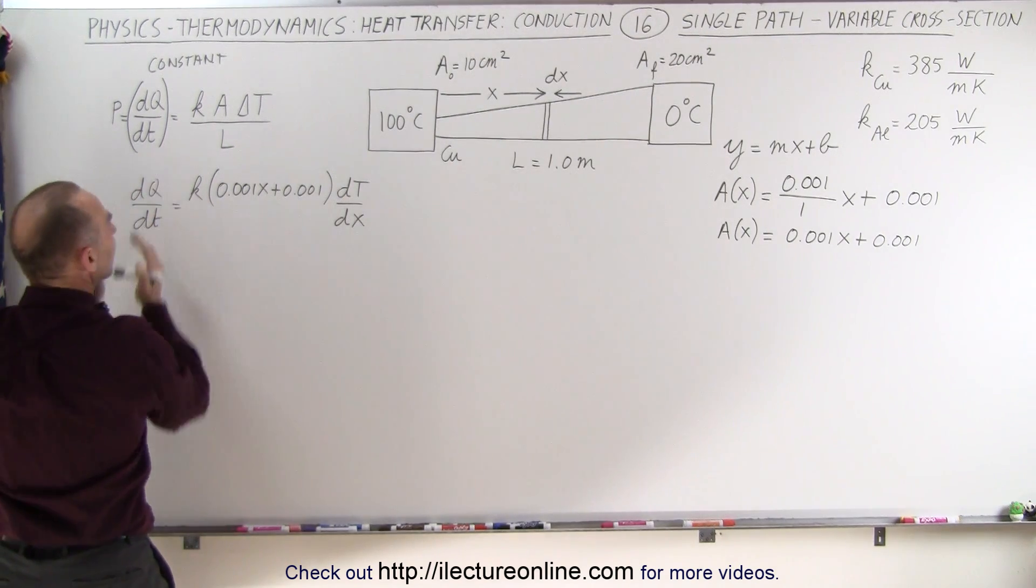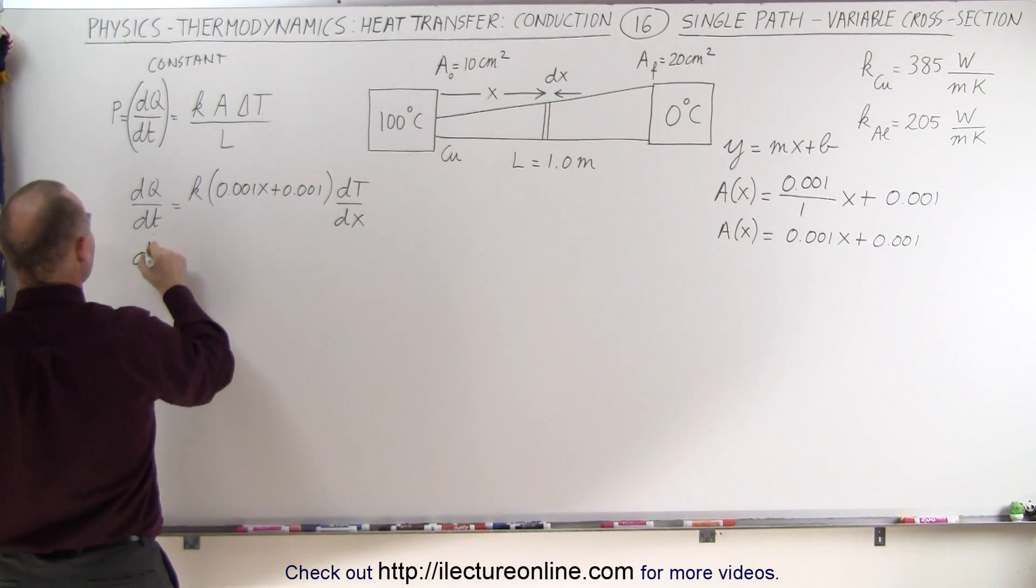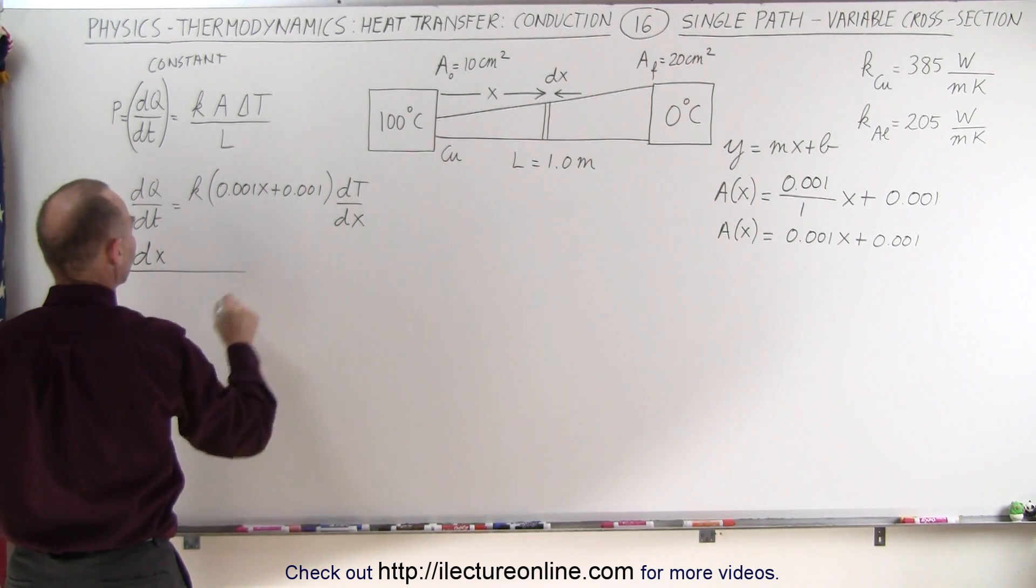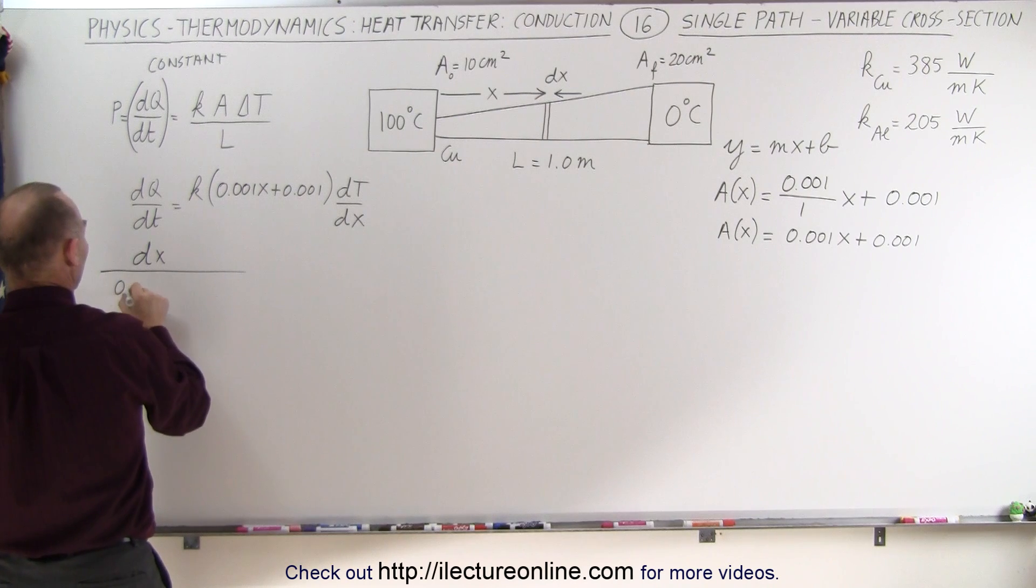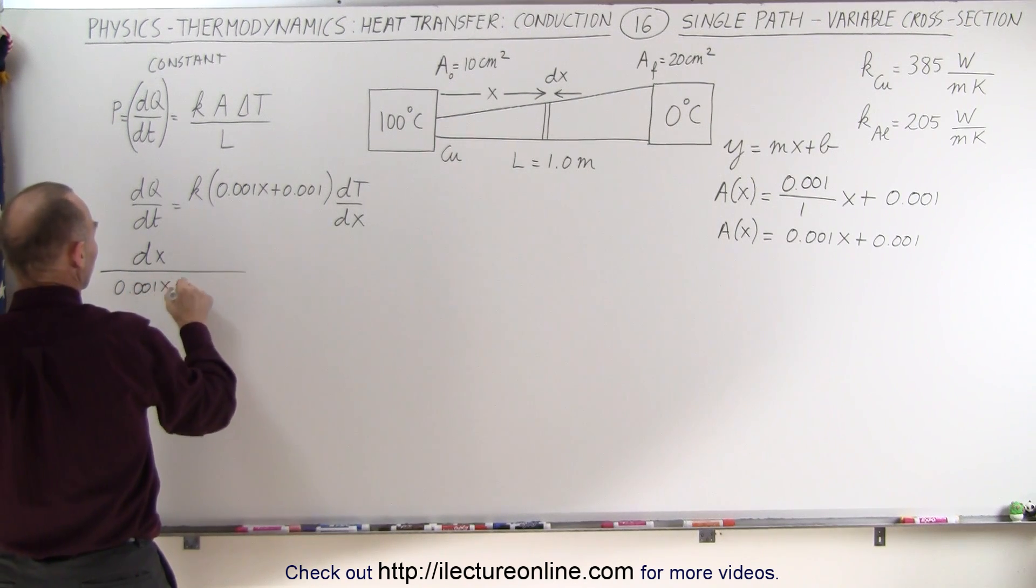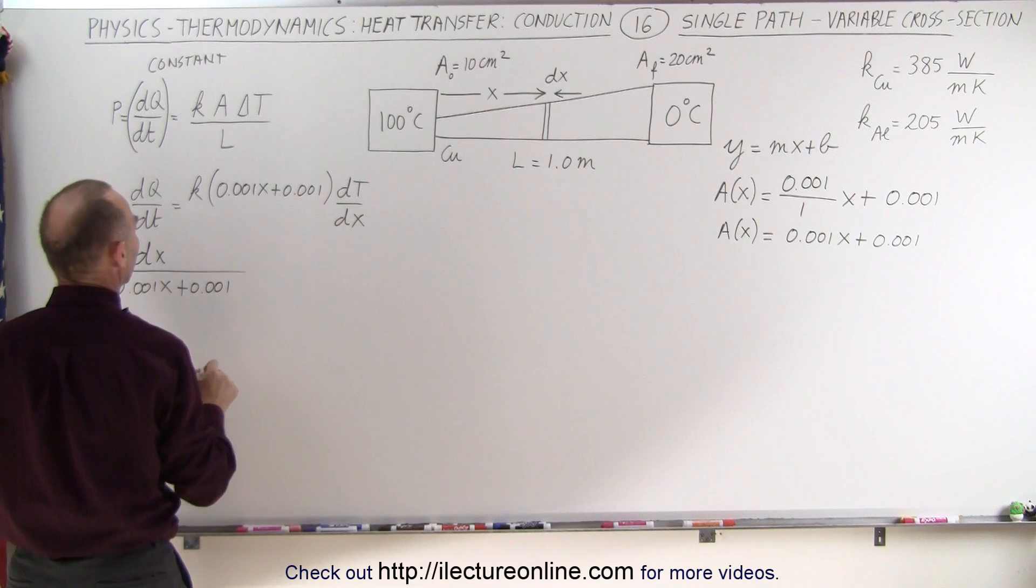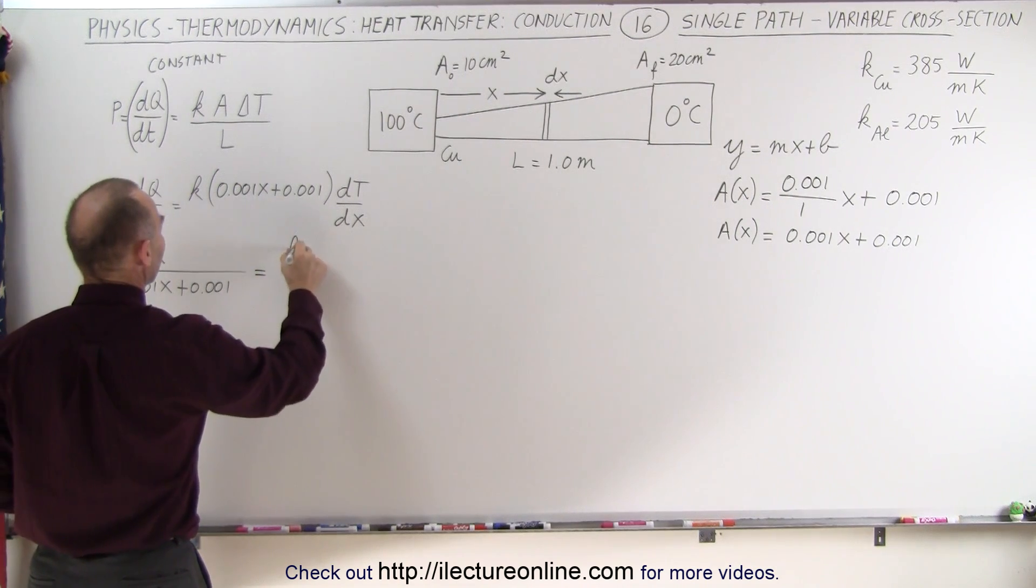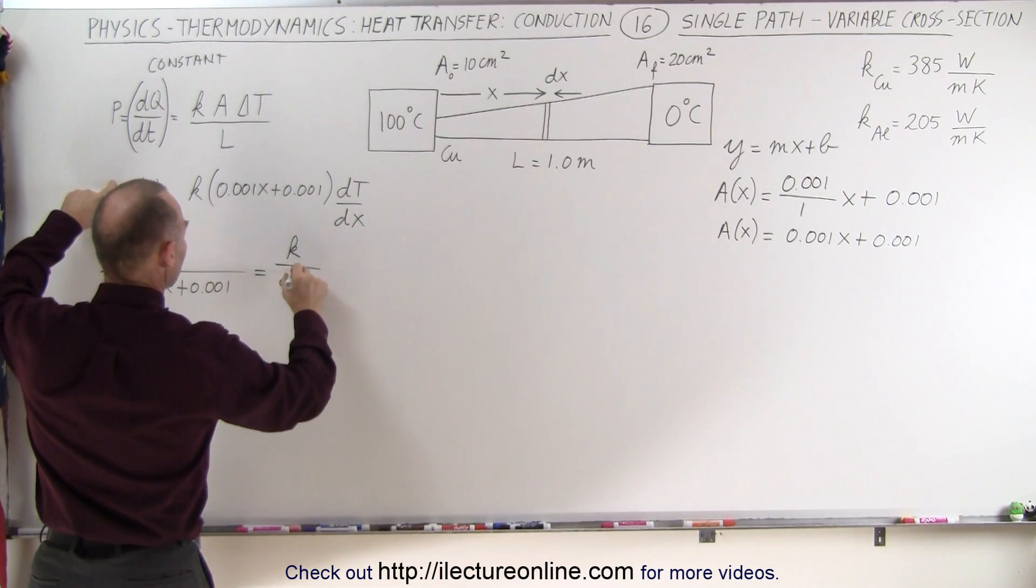And remember that this quantity here is a constant. So that means we have dx on one side divided by 0.001x plus 0.001. And that equals k divided by the dQ/dt...